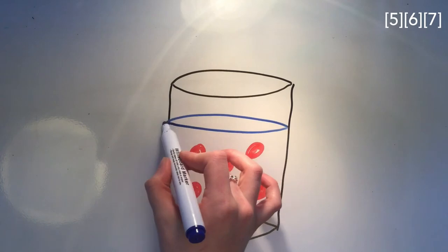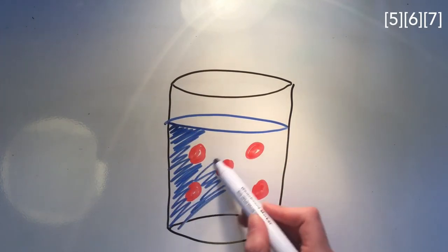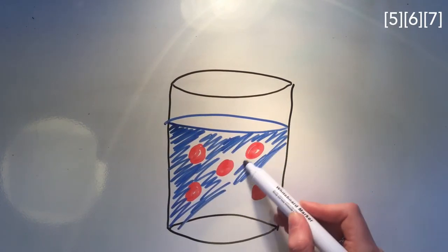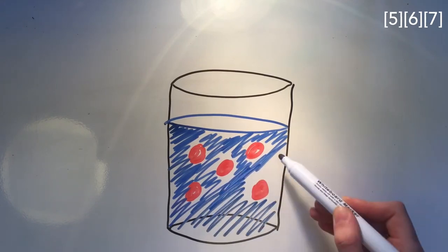In interfacial polymerization, the polymerization occurs on the interfacial layer between two immiscible, usually liquid phases.